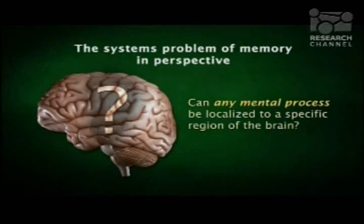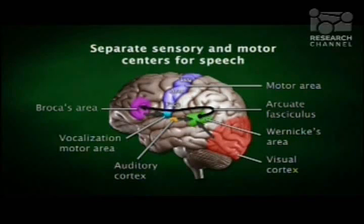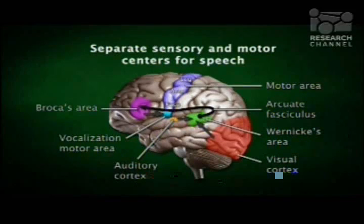Let me step back and summarize what we've covered so far. We began by asking: can any mental process be localized to specific regions of the brain? And we saw that the answer was yes, but it's not a simple view. Mental processes are not localized to a single Wernicke scheme — they involve several areas, single regions, that are precisely interconnected. We'll hear more about that in subsequent lectures.